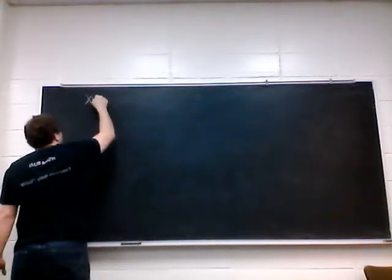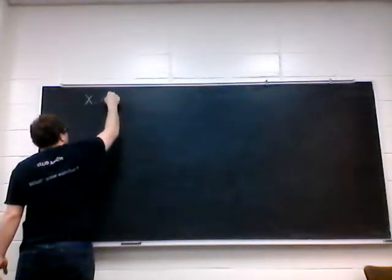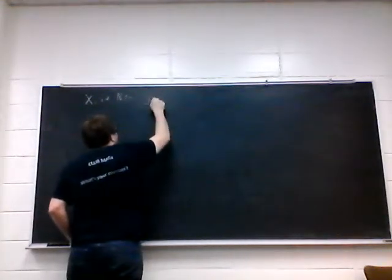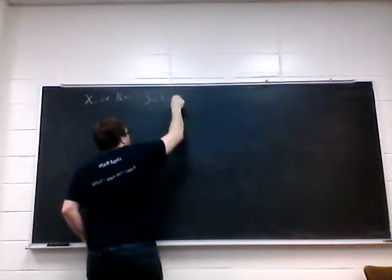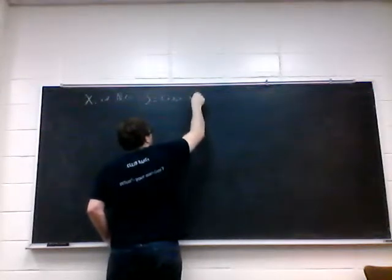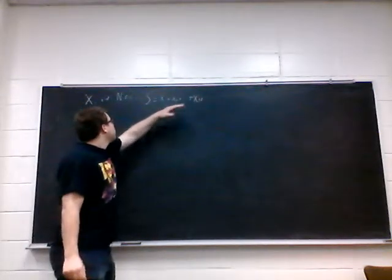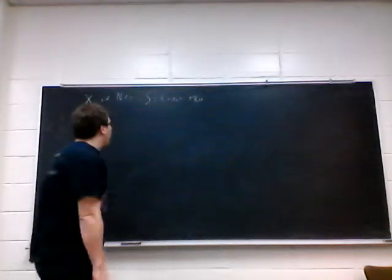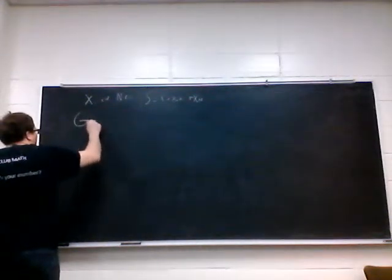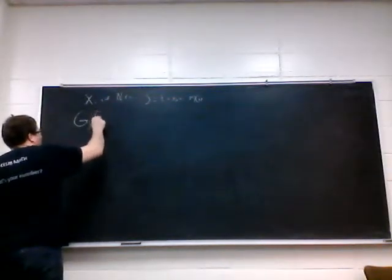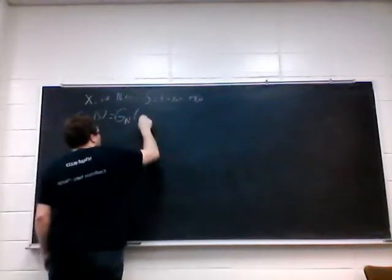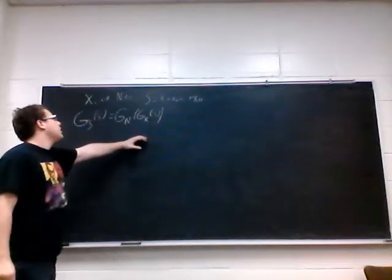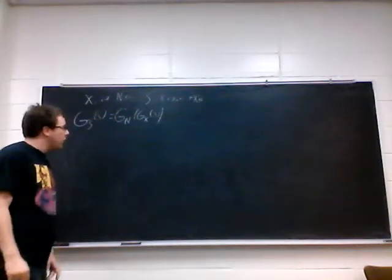So x sub i are independently and identically distributed random variables, and n is another random variable. If we have S equal to the sum x1 plus x2 plus, all of these are discrete by the way, plus x sub n — so you have a random sum of random variables, because this number n is random, you don't know what it is. What we're going to say is the probability-generating function of our random sum is equal to the composition of functions of the probability-generating function of n and one of the x sub i's. That's what the theorem says.